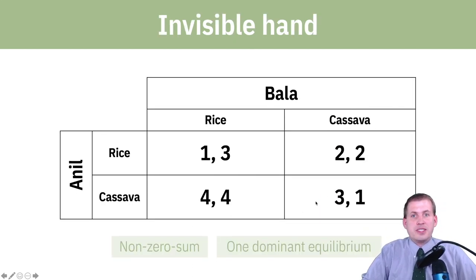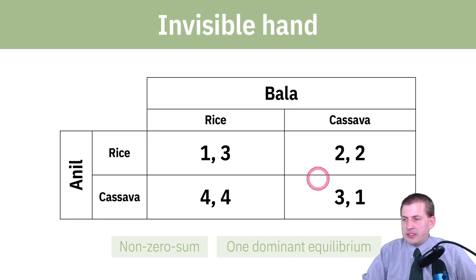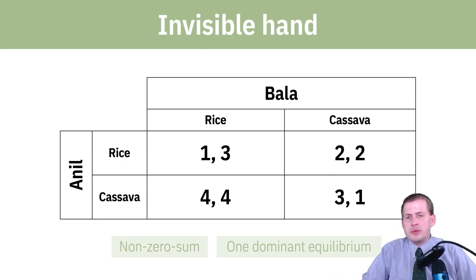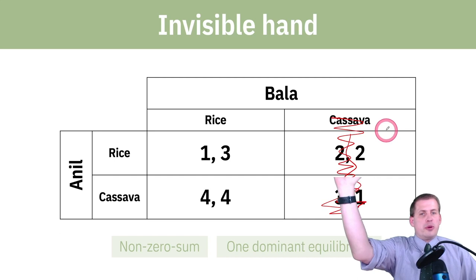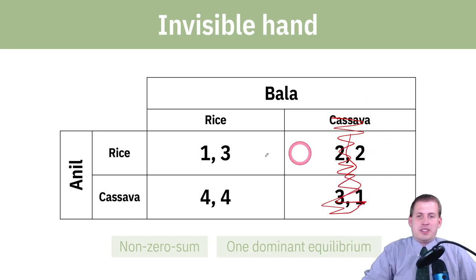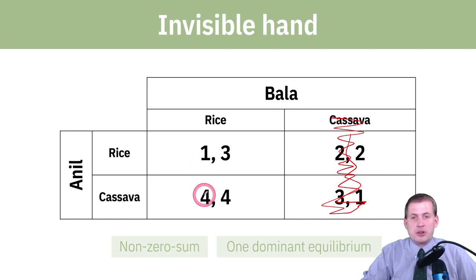The way you solve these things involves no actual equations — it all just involves covering up a column and looking at numbers. You go through a four-step process. First, cover up the rice column and ignore it. If you are Anil and you know that Bala is growing rice, what is your best choice — should you grow rice or cassava? You know Bala is growing rice, so you look at whichever number is the highest.